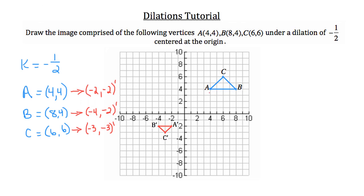The one-half reduces the size to half the original. For example, if length AB is four units, then A prime B prime is two units. Remember: a negative scale factor inverts the image; a fraction less than one produces a smaller image; a value greater than one produces an enlargement.